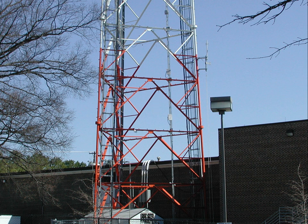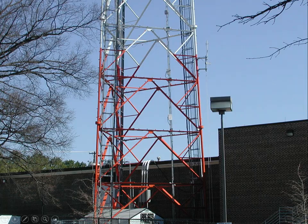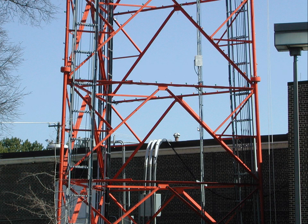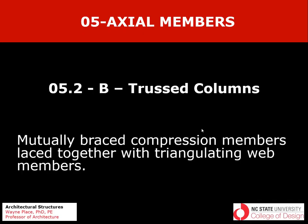This is a classic K brace configuration in a tower. In this case it's not a pin-pin column but a cantilever column coming out of the ground — a flagpole sort of quality. The long members are bracing the midpoints of the horizontals, and then those elements brace the midpoints of others. When you get high enough in the structure and it gets narrower, you go away from the K brace and just use cross-bracing. That ends our discussion of truss columns, which involves mutually braced compression members laced together with triangulating web members.